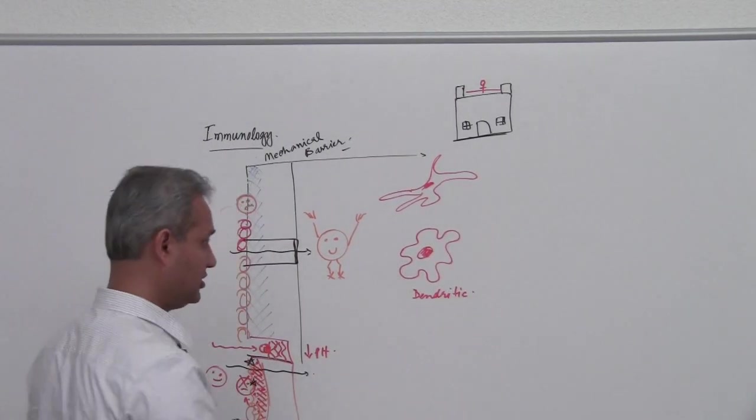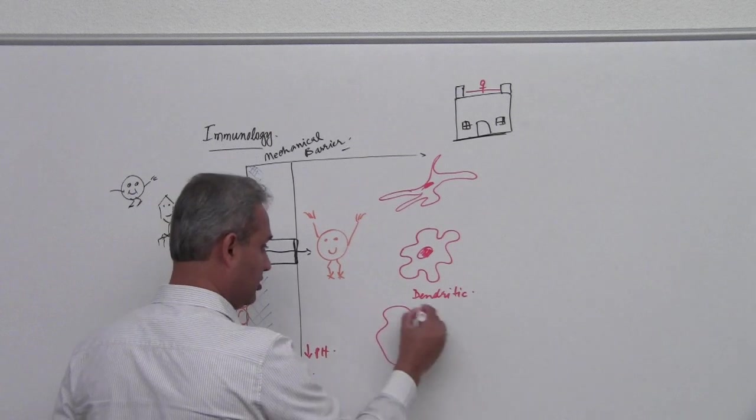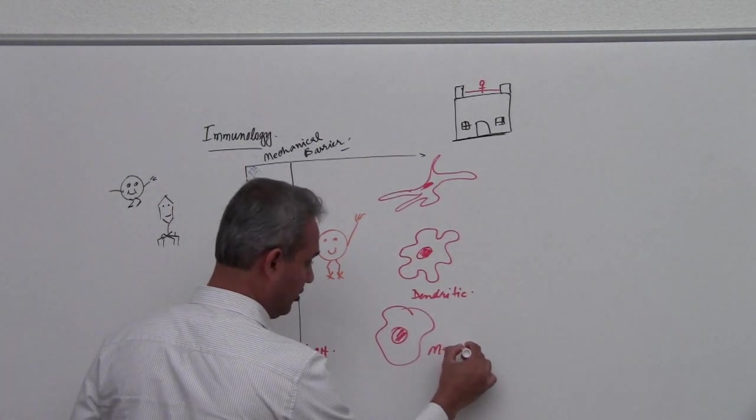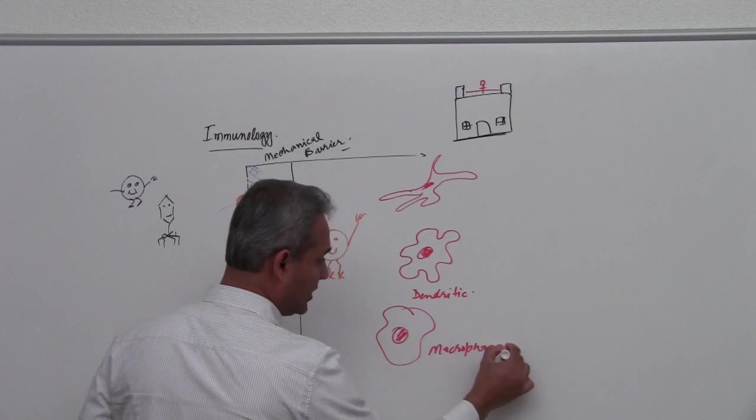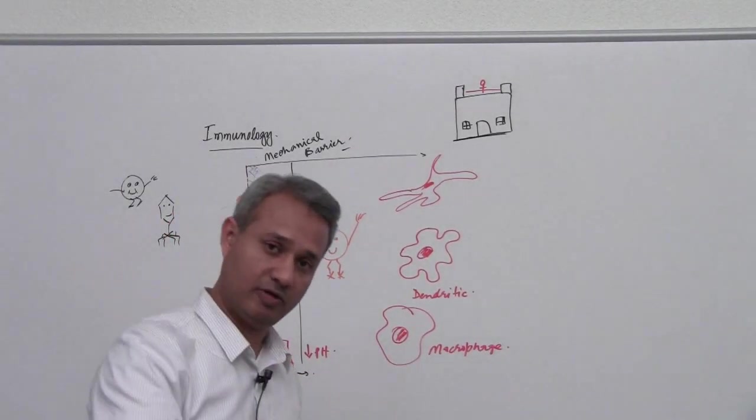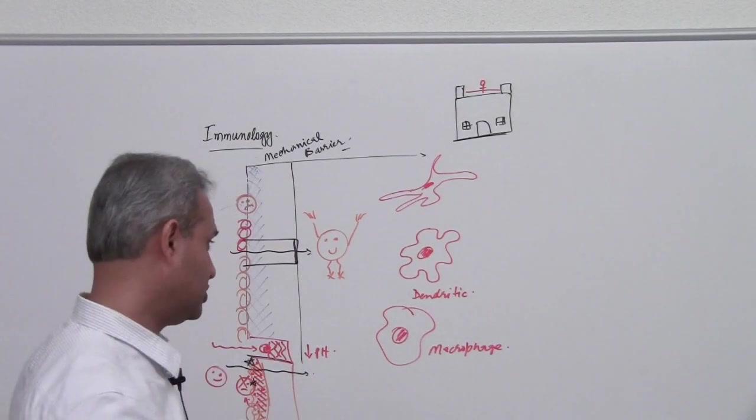Similarly, our body has macrophages which are also cells of the immune system. We would talk about all of those cells, we will talk about dendrites, what do they do, we will talk about macrophage, where do they come, what is their function.